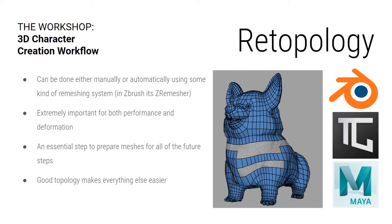You can do retopology either manually or automatically using a remeshing system — in ZBrush it's ZRemesher, and Maya has Quad Remesh. It's extremely important for both performance and deformation. Your topology — where your verts are — determines how your mesh deforms and has a big impact on weights. It's an essential step to prepare meshes for all future steps, and good topology makes everything easier.